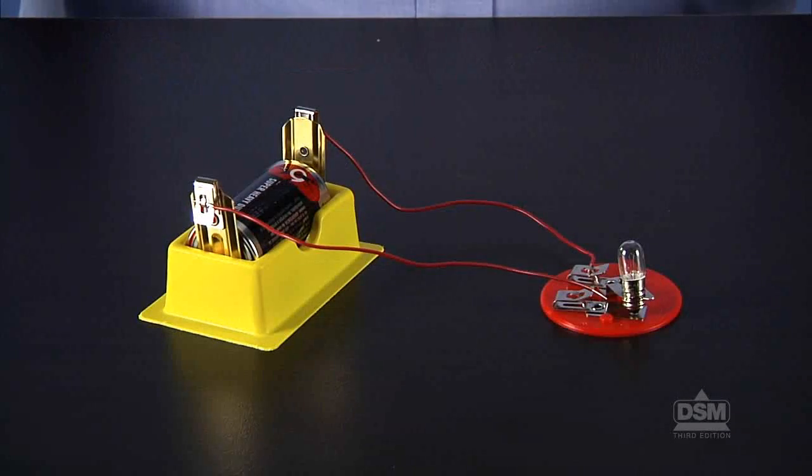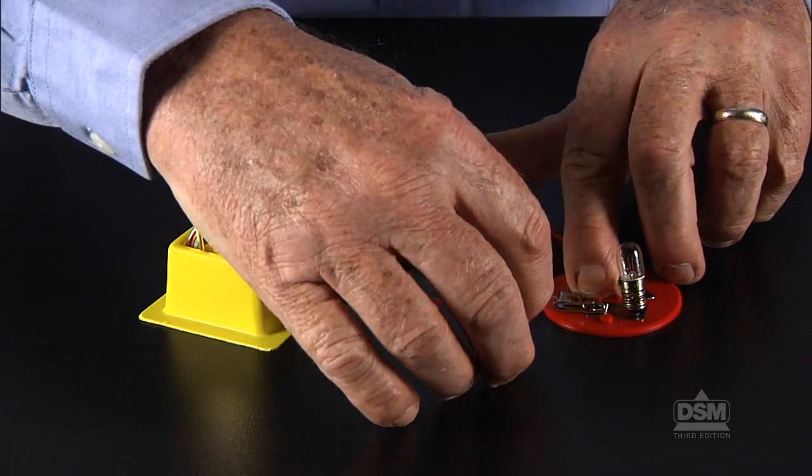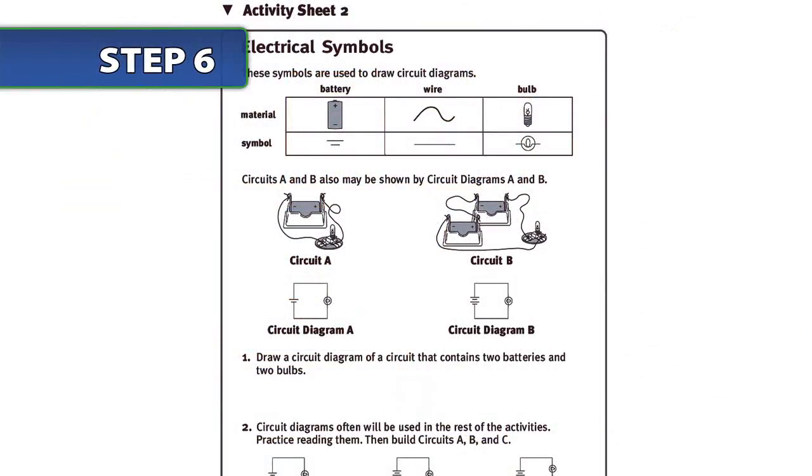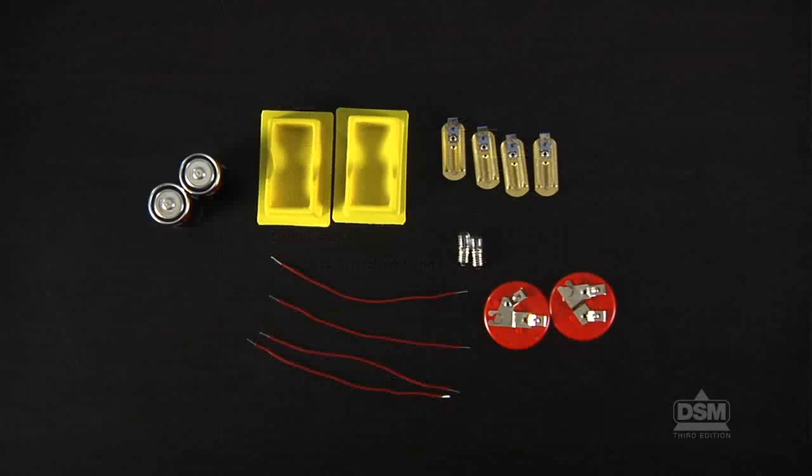Then, ask a volunteer to assemble the circuit shown in the circuit diagram and test it for everyone to see. Distribute Activity Sheet 2 to each student and the materials to each team.